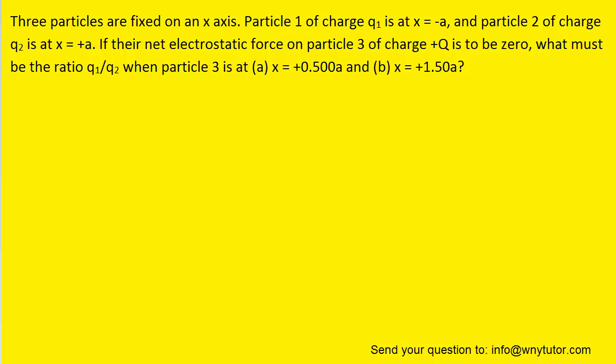Our first step to solve part A is to draw a picture of the charge distribution. So charge Q1 is situated at negative A, Q2 is at positive A, and then positive capital Q is situated at positive 0.5A.